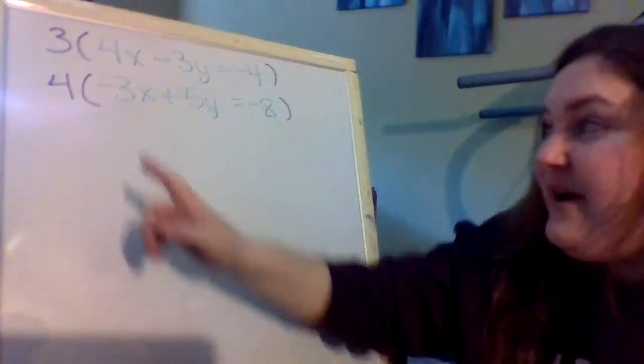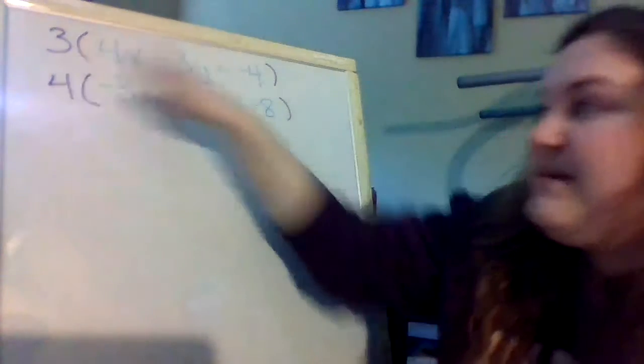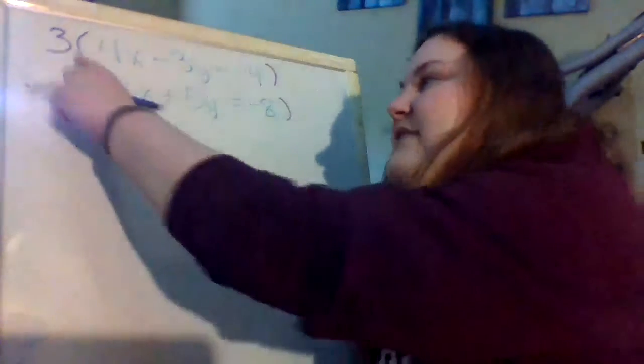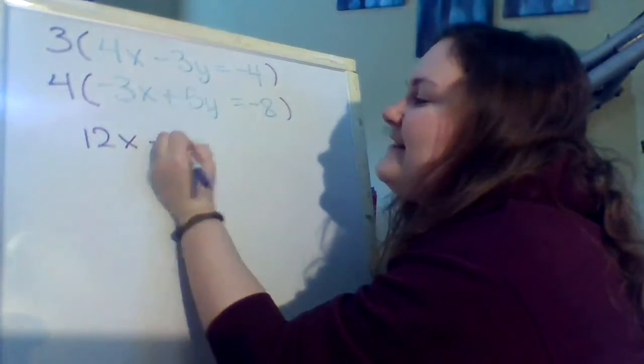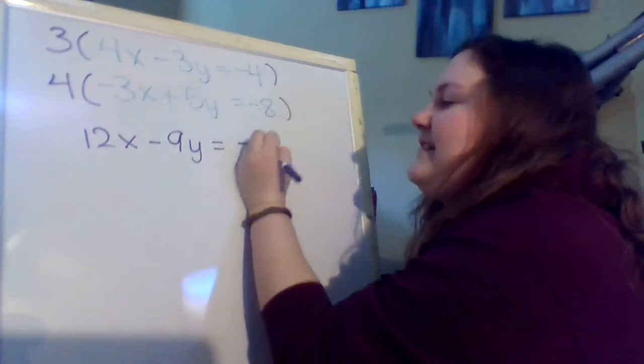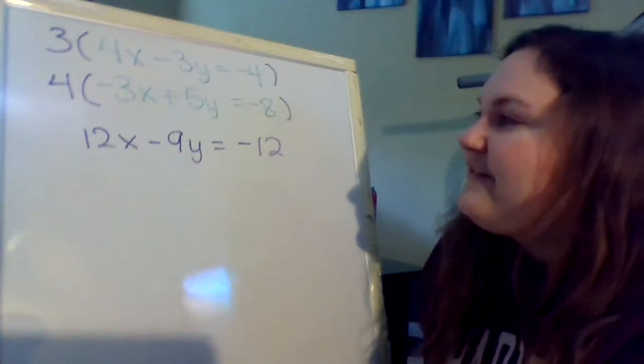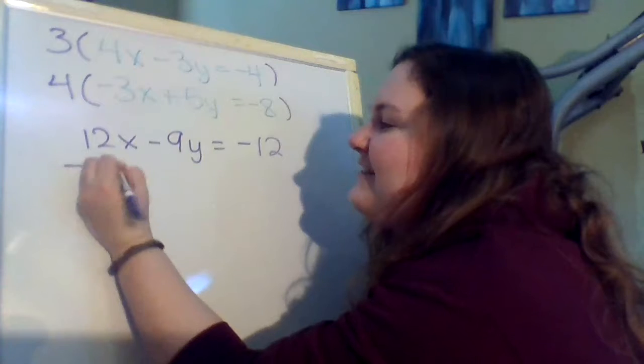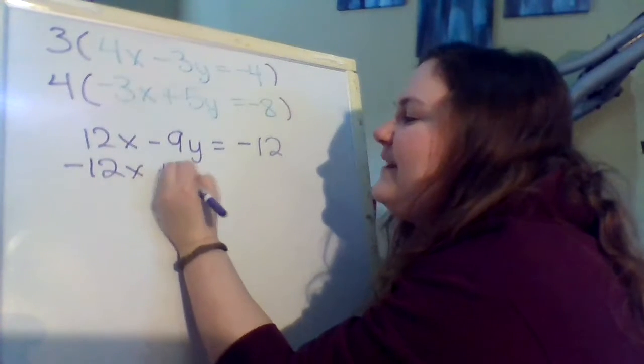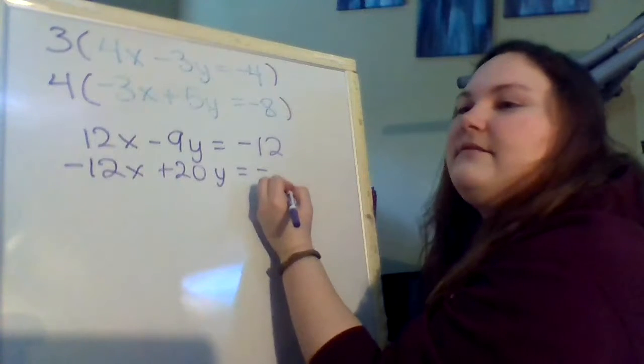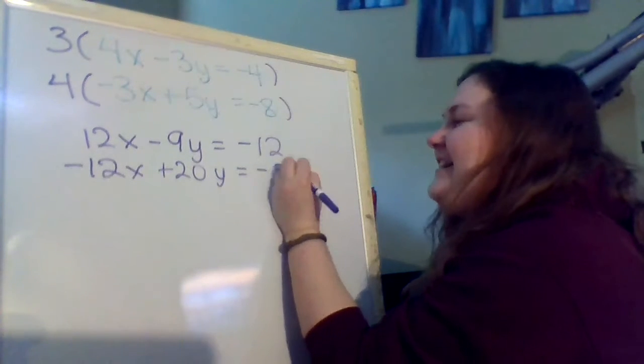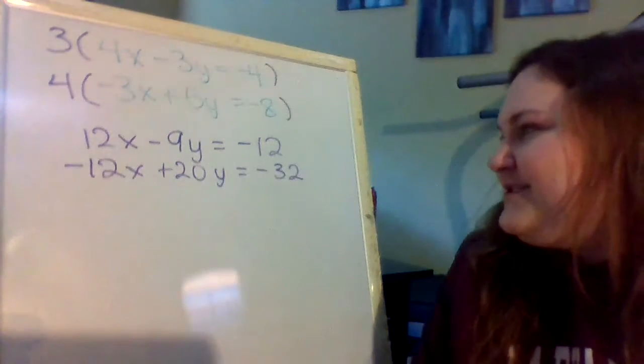Once we do that, we want to go ahead and, just like in the previous notes, multiply our entire equation. When I do that with my first equation, I'm going to get 12x minus 9y equals negative 12. Then for our second equation, I'm going to get negative 12x plus 20y equals negative 32.